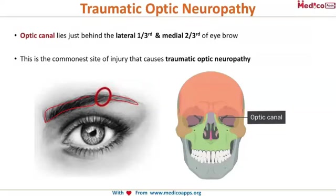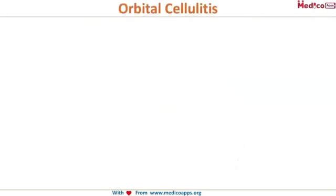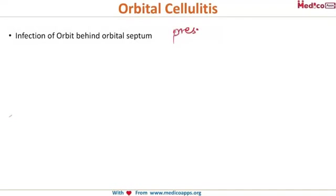Now let's look at inflammatory conditions of the orbit. Orbital cellulitis is the infection of the orbit behind the orbital septum. When inflammation occurs in front of the orbital septum, it is called preseptal cellulitis, whereas when infection occurs behind the orbital septum, it is termed orbital cellulitis.